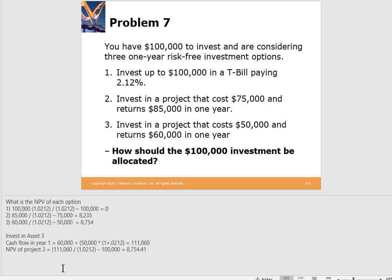Next, we have $100,000 to invest across three options: invest in T-bills at 2.12%; invest $75,000 to get $85,000; or invest $50,000 to get $60,000. Which should we choose? Calculating NPVs using the capital budgeting worksheet: Project 1 (T-bills) has NPV of $0; Project 2 has NPV of $8,235; Project 3 has NPV of $8,754.